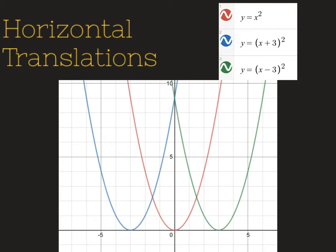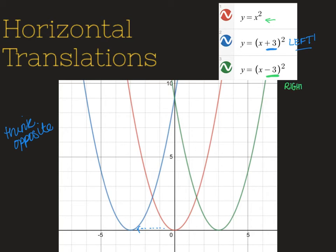Next up we have a horizontal translation. Again, our red function is our parent function. Our blue function has a plus three on the inside. Horizontal translations do get a little tricky — always go opposite of your intuition, think opposite. We see a plus three on the inside, but that's actually telling us it's going to move to the left, left three units. Now if we look at our green parabola, we see a minus three, and that's telling us it's going to be to the right. So our minus three means our whole parabola got moved to the right three units.